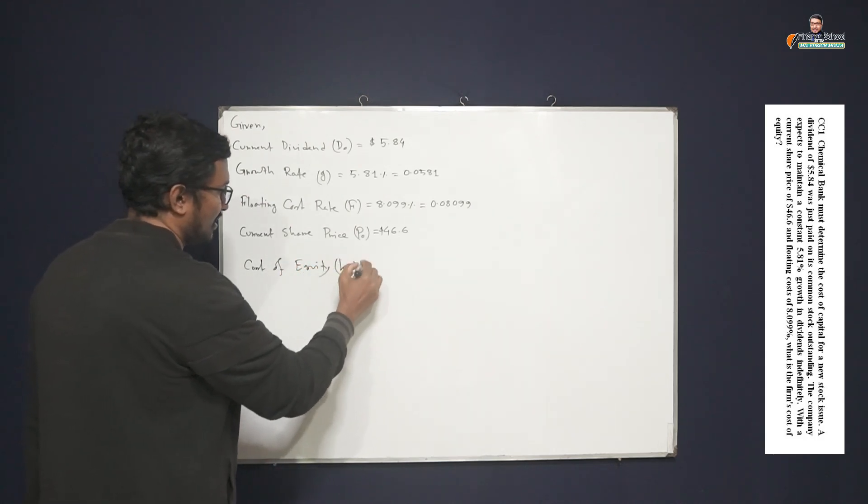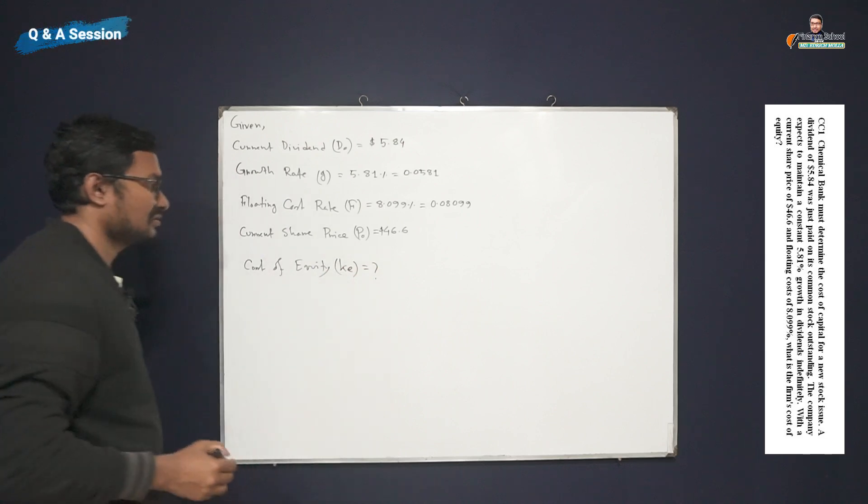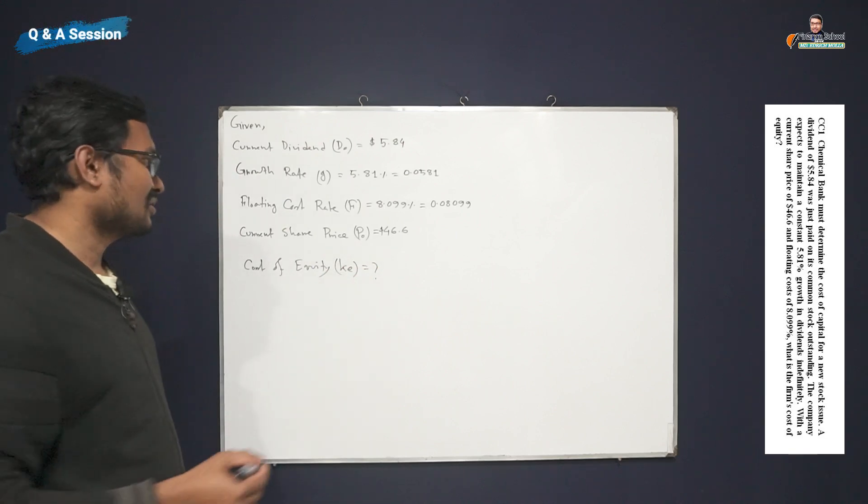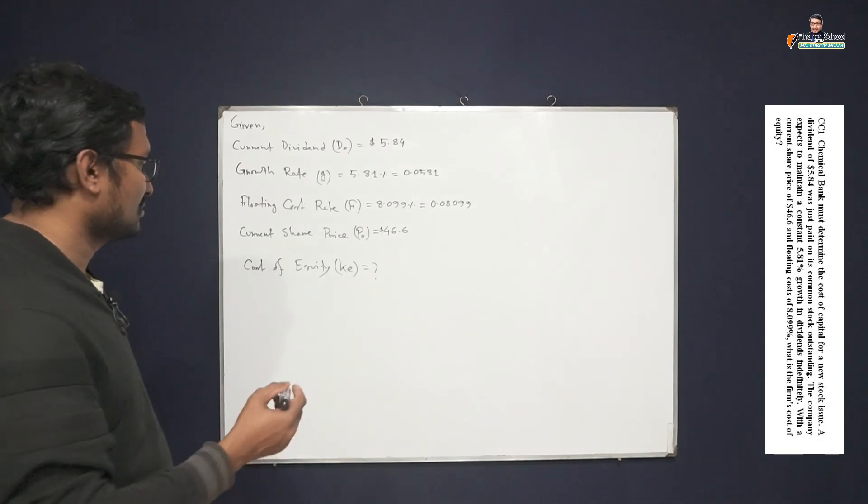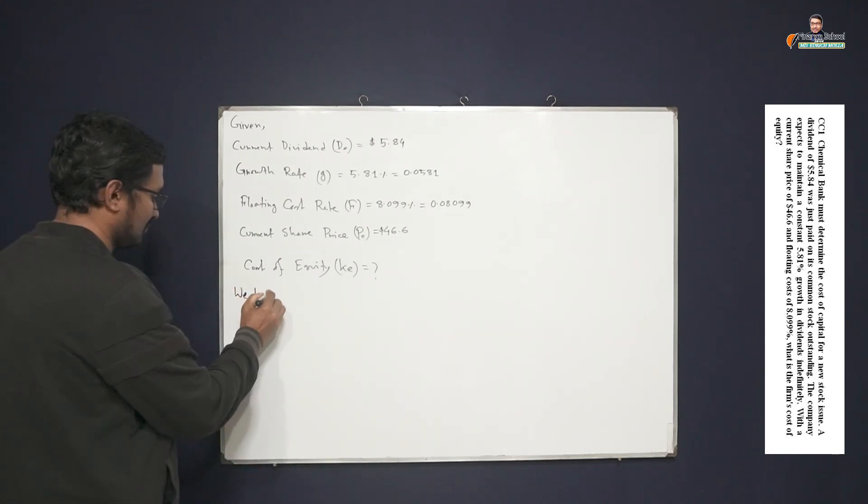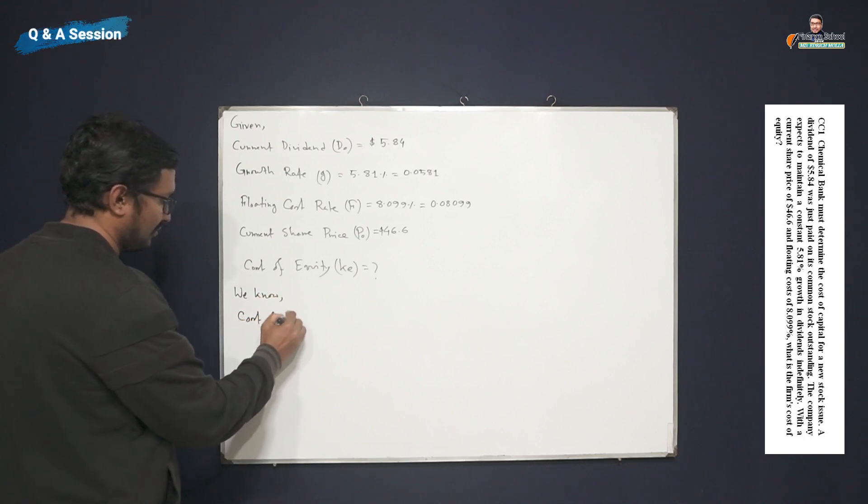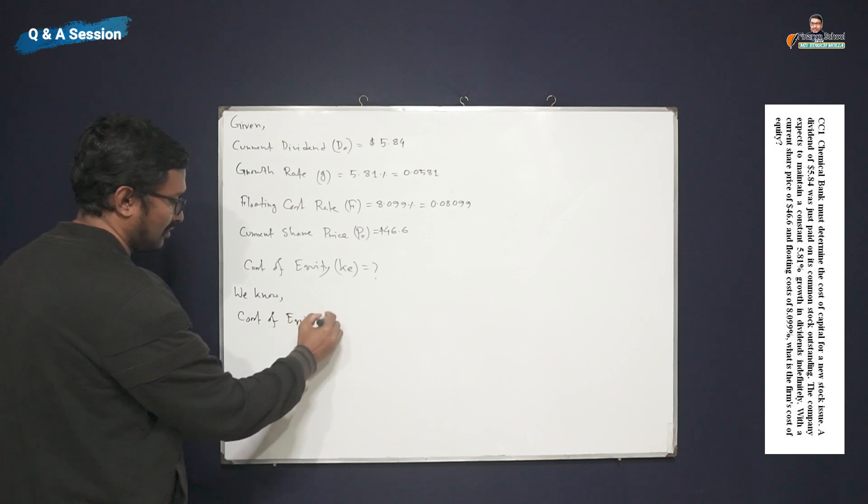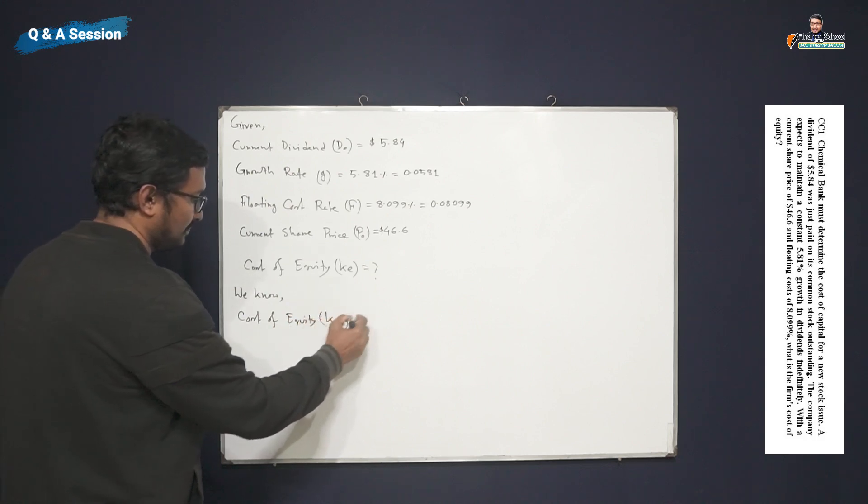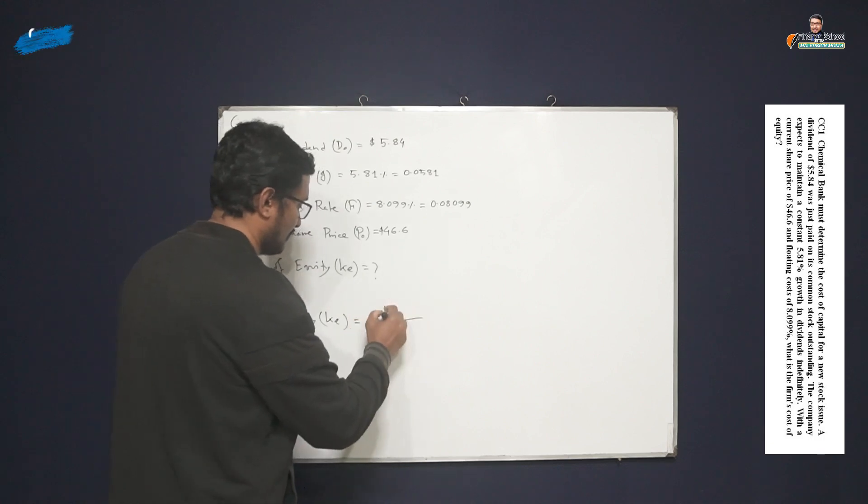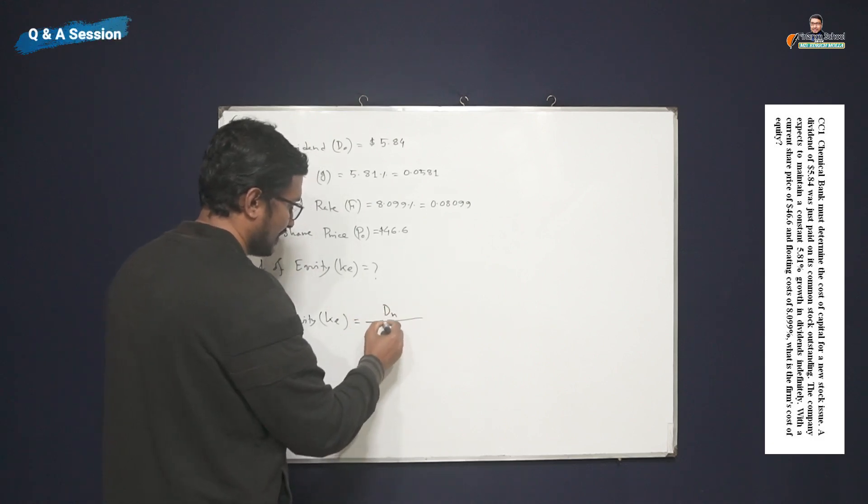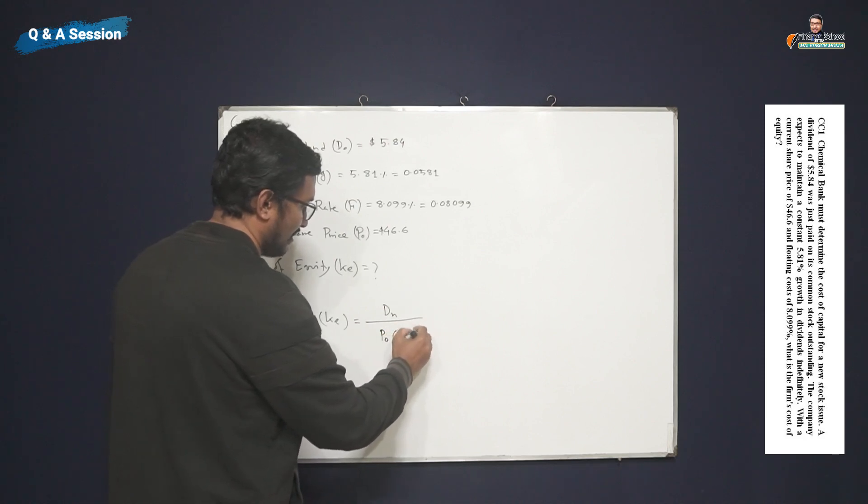From the given data, we have to compute the particular requirement which is cost of equity, denoted by Kₑ. The formula is Kₑ = D₁/(P₀(1-F)) + g.